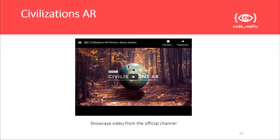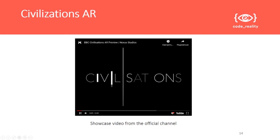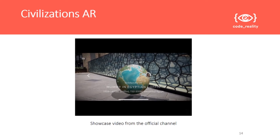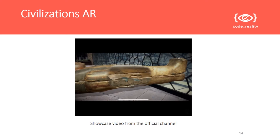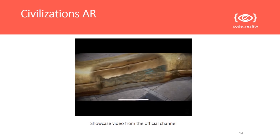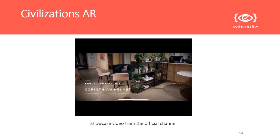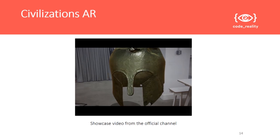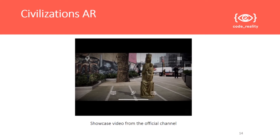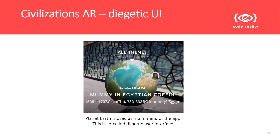Our next example is Civilizations AR by BBC. Civilizations AR shows ancient artifacts as virtual models and historical objects. You select an artifact you want to study, or a virtual model of planet Earth. It's a great example of a spatial, or so-called diegetic interface. In this case, a user discovers the location of the selected artifact in the simplest way — it is a great example of smart storytelling.